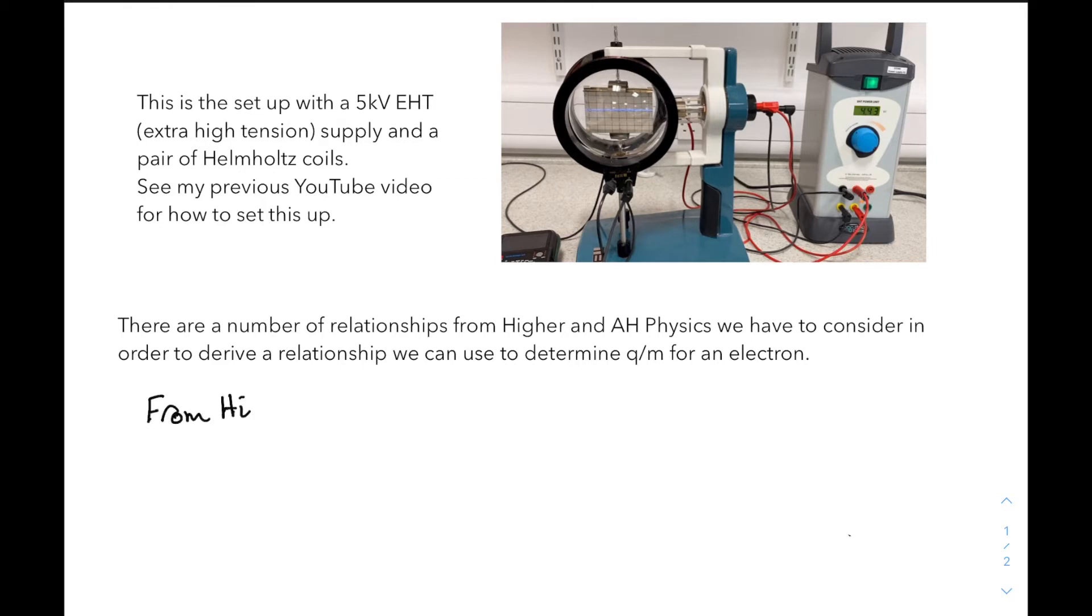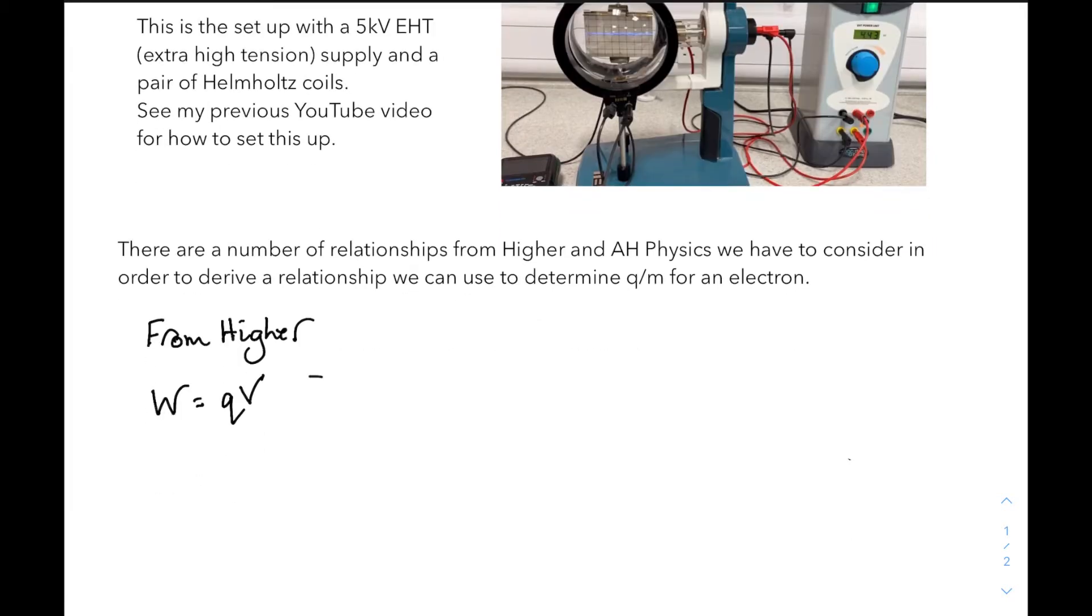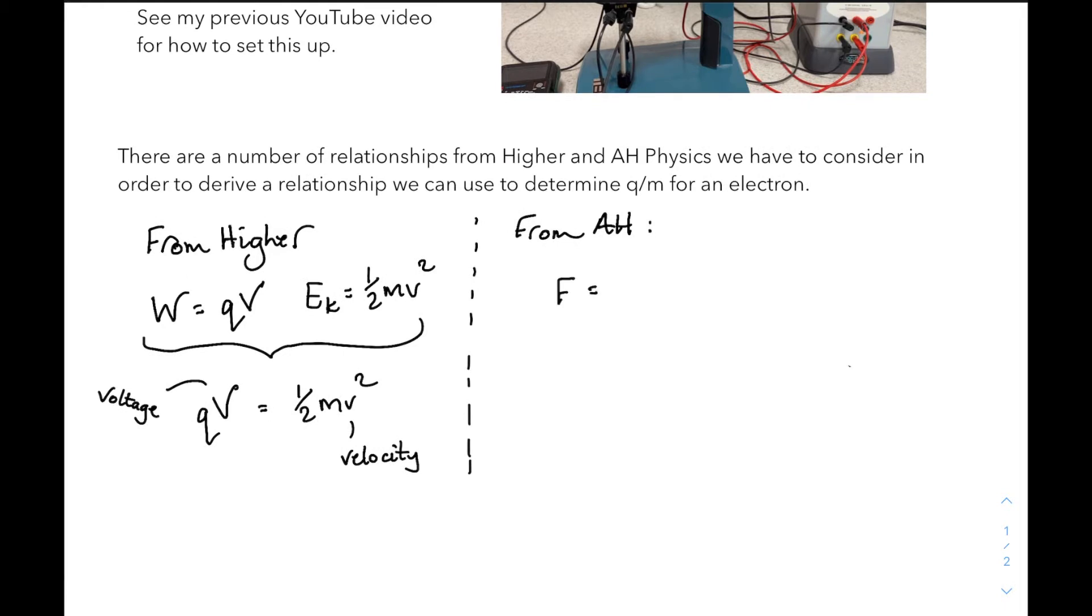Now, to derive the relationship we need, we need four equations that we have met. Two from higher and two from advanced higher. So from higher, QV is a half mv squared. That's the work done in accelerating our electrons, and that work done is transferred to kinetic energy. From advanced higher, the force that acts on the charges when they enter the magnetic field is QvB. That makes them move in a circle, so that's equal to a centripetal force mv squared over r. And we can equate them as well. QvB equals mv squared over r.